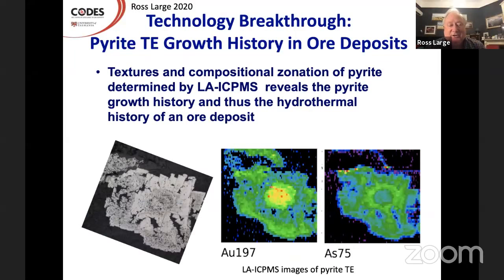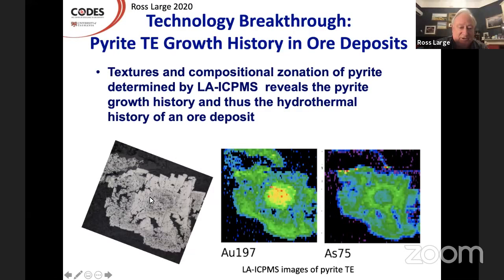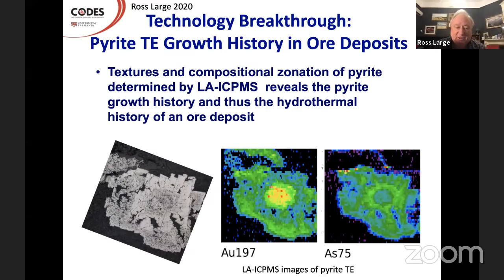We had a technology breakthrough about 10 to 15 years ago: the development of the laser ablation ICPMS system. That allows us to analyze to very low levels the quantities of trace elements in sulfide minerals. We have a mapping facility where we can map out a pyrite like the one shown here — which is an early diagenetic pyrite surrounded by a later metamorphic overgrowth — and look at all the trace elements and their distribution in those zones. In diagenetic pyrites we don't see a lot of this because they don't have overgrowth and zonation. In hydrothermal and metamorphic pyrites, we see this beautiful zonation and change.